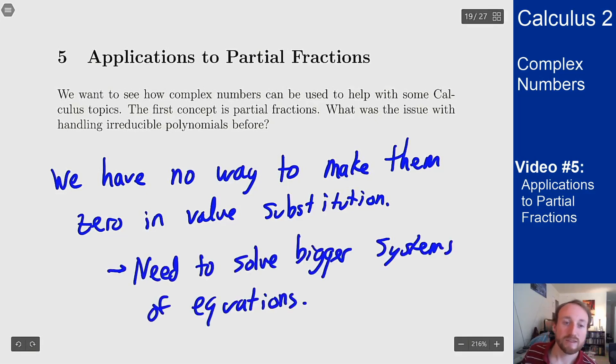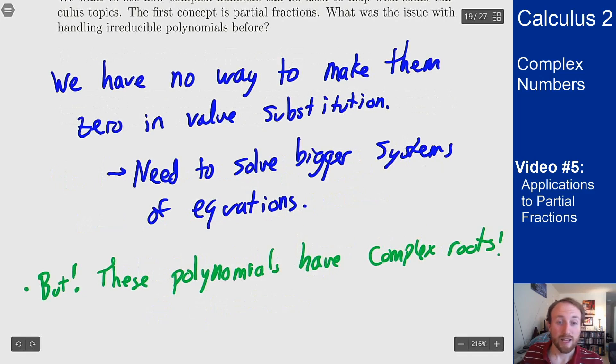However complex numbers now come in and save the day because the point is the reason why we didn't have numbers to plug in to make these polynomials zero was because they had no real roots, but they do have complex roots. And why is that great? Because now we can plug in a complex number in for x which will get rid of the irreducible quadratics and then solve the rest of the equations out from there.